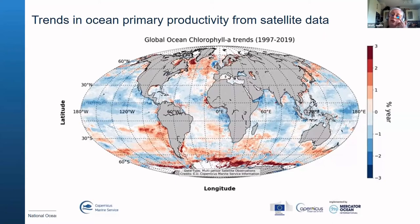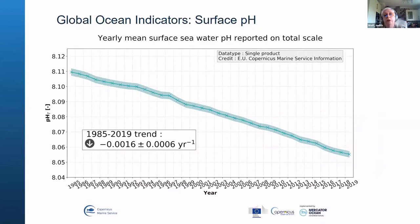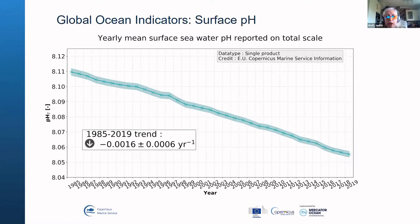Another indicator is surface pH, which is basically a way of looking at ocean acidification. If the seawater pH is reducing, then the water is getting less alkaline and more acidic. You can see that there is a steady trend since the 1980s to the present day, obviously happening due to the increased amounts of carbon dioxide being dissolved in the ocean.